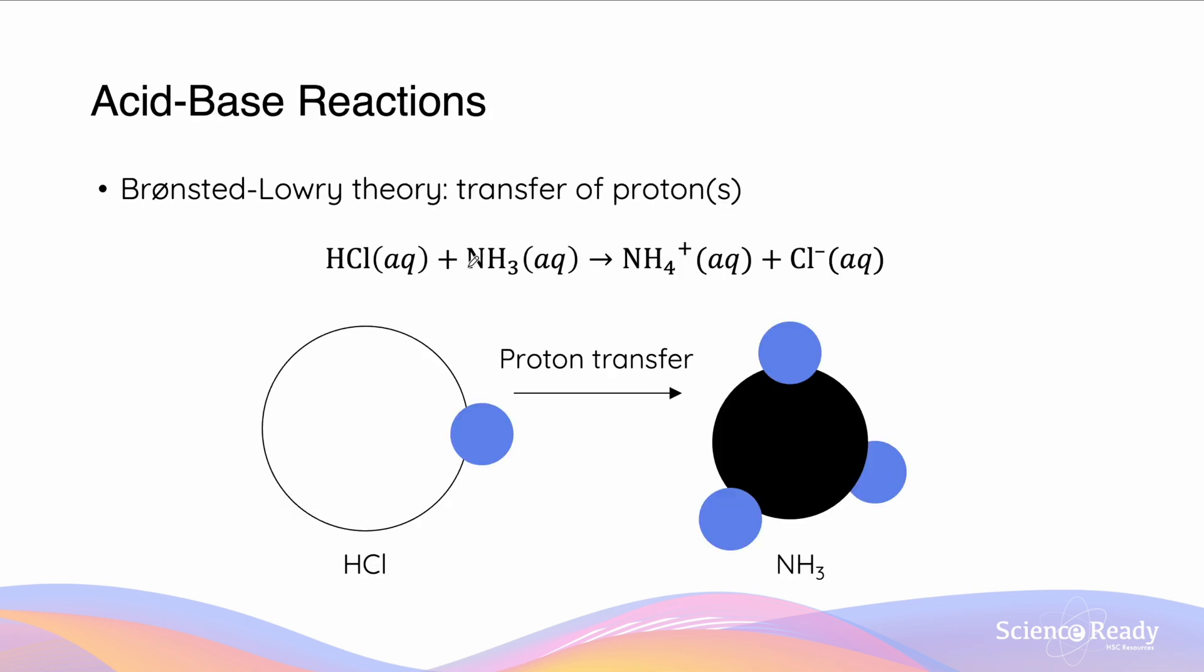The Bronsted-Lowry theory says that an acid will donate its protons to the base which will accept the proton. So here H+ is our proton. We know it's a proton because H has one electron and one proton, and because it's ionized we lose one electron which means we only have one proton remaining.